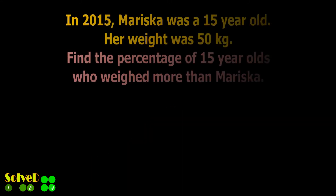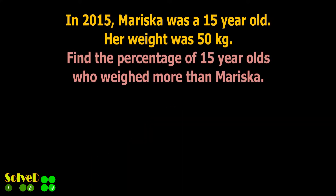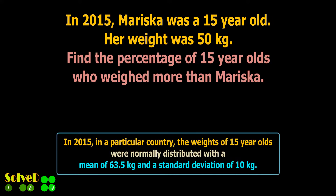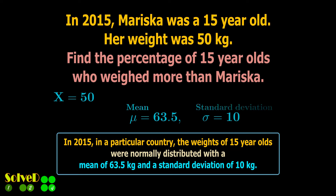Consider this example. In 2015, Mariska was a 15-year-old in the country and her weight was 50 kg. Find the percentage of 15-year-olds in that country who weighed more than Mariska. So our X value is 50 kg. The mean value and the standard deviation of the population is given.